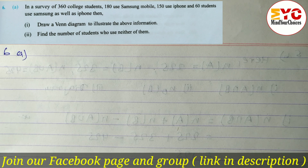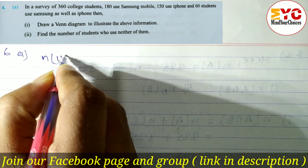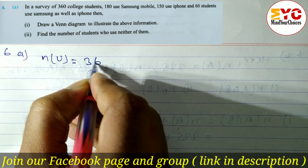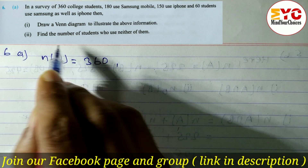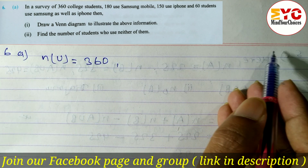150 use iPhone mobile and 60 students use Samsung as well as iPhone — 60 students use both. In number one, we have to draw the diagram. In number two, we have to find the number of students who use neither of them. 'Neither of them' means union complement. Total number of students, n(U), is equal to 360. Let S denote Samsung mobile and I denote iPhone.